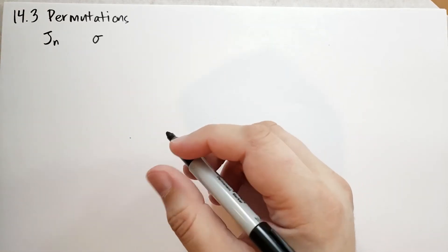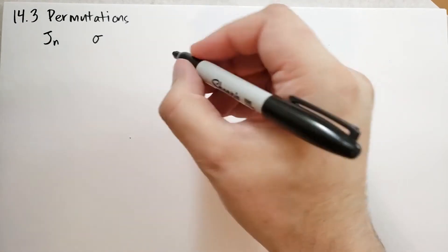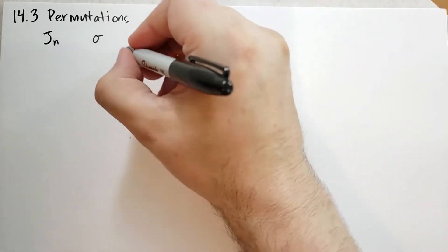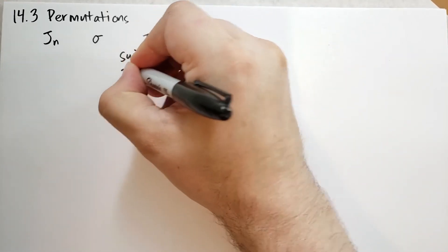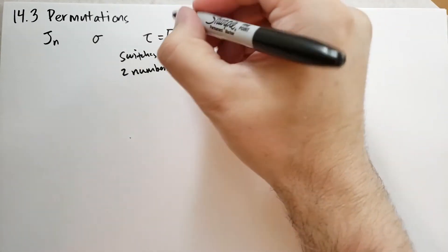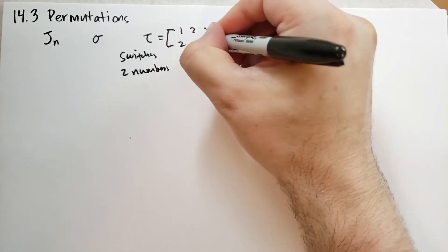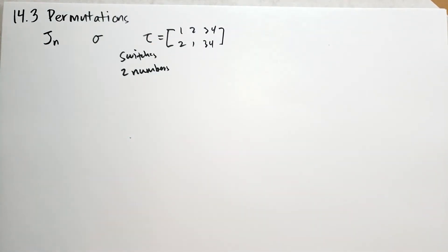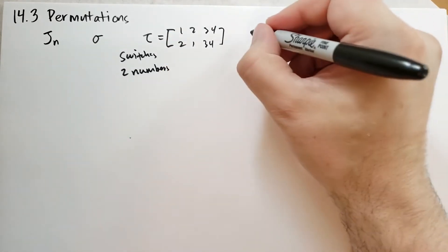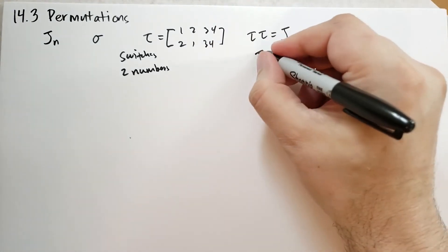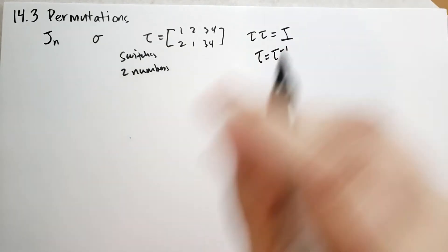Transpositions interchange two distinct numbers, i not equal to j, and leave the others fixed. A transposition is represented by tau, and it's a transformation that switches two numbers. An example of a transposition could be (1,2,3,4) goes to (2,1,3,4) — this transposition is switching the two first items. If you apply the transposition to itself, you just reverse those numbers back, so the transposition is its own inverse, which makes math a little bit easier.